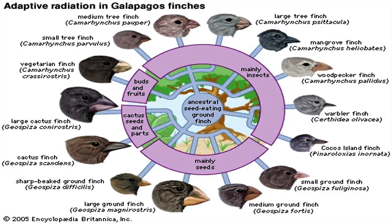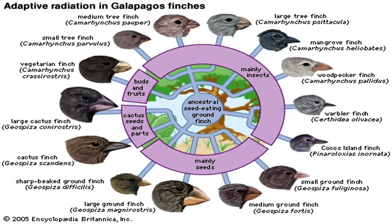These are the species of finches that arose from a single species that colonized the island. Their beak size and shape depends primarily on what they eat, and they diversified and spread out because they experienced an ecological release when they encountered a barren island.